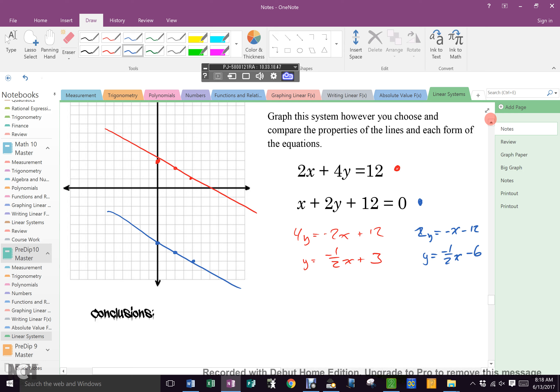There's only one solution because they intersect. Well, what's our conclusion here? There is no solution because they don't intersect. Why don't they intersect?